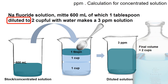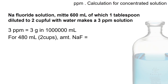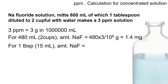First, we need to understand the meaning of 3 ppm: 3 grams in 1 million ml. For 480 ml — which equals two cups — of the final solution, the amount of sodium fluoride needed is 480 × 3 ÷ 1,000,000 = 1.4 milligrams. So for one tablespoon taken from the stock solution, the amount of sodium fluoride is 1.4 milligrams.